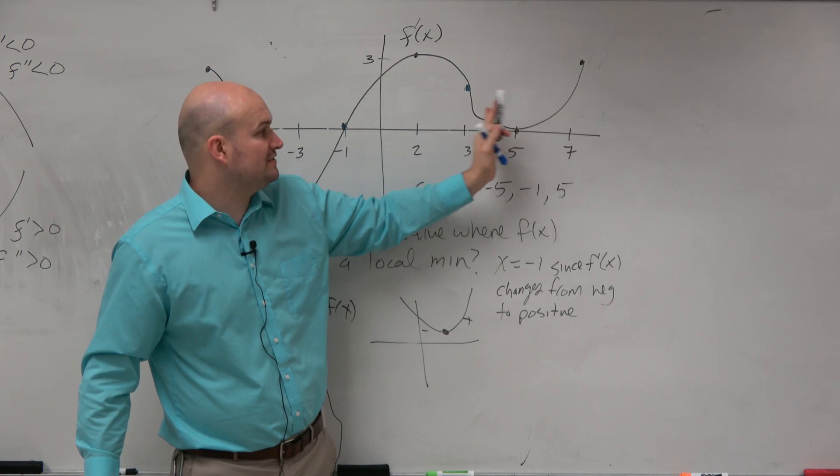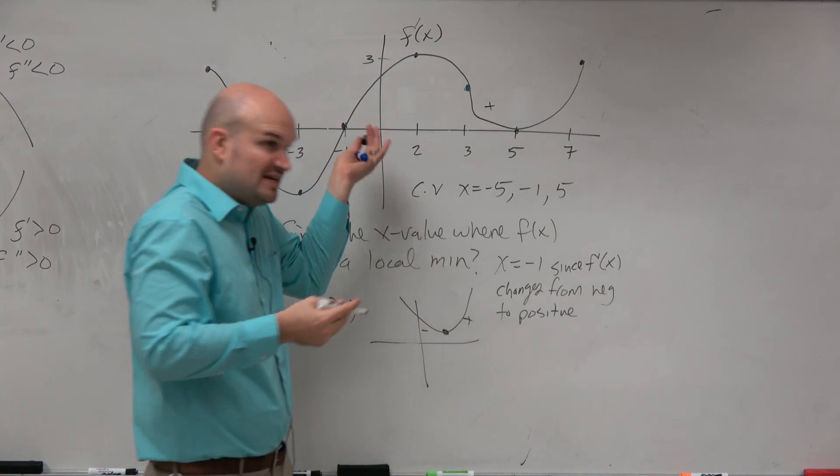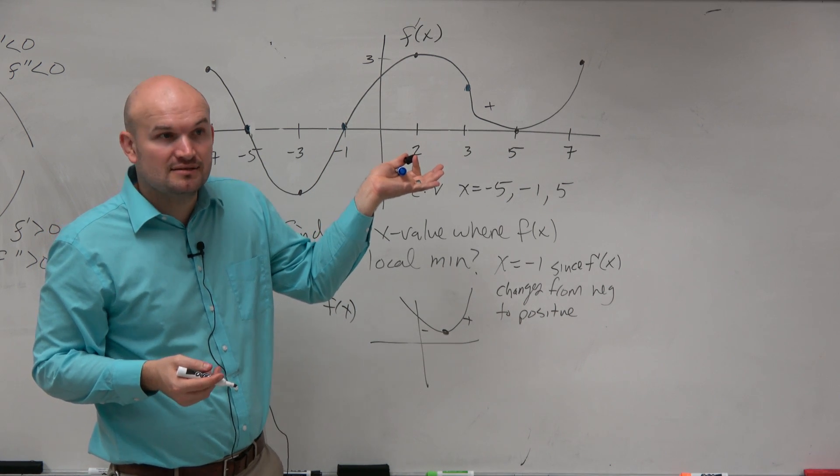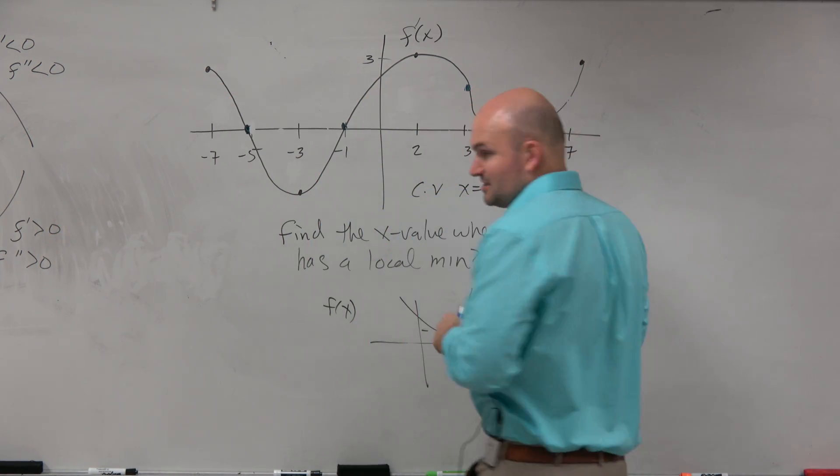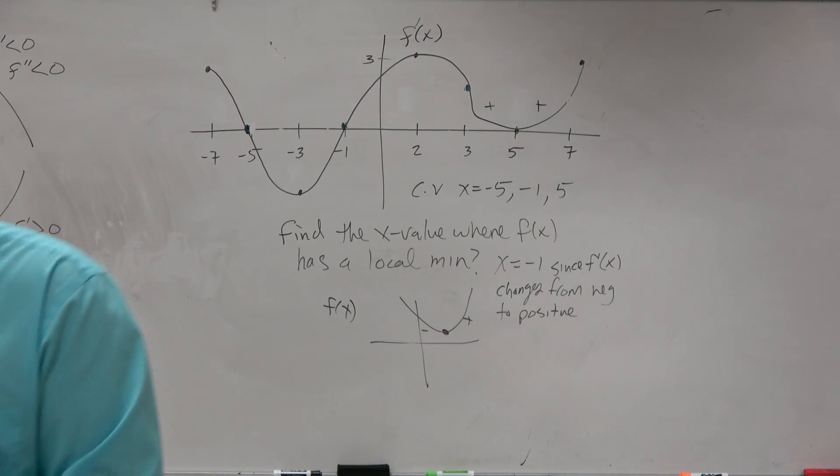What's the value of the derivative to the left of 5, positive or negative? It's positive. It's above the x-axis. What about to the right? Positive. We just did an example like that. Remember the first example we did? It's not a relative extreme.